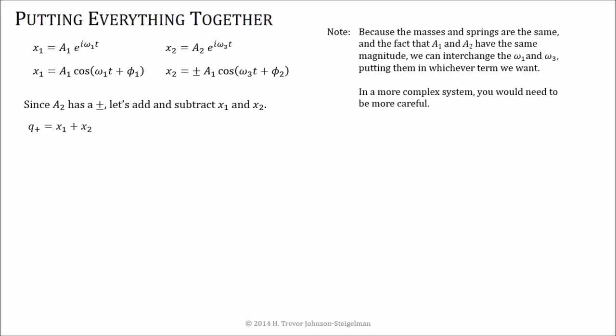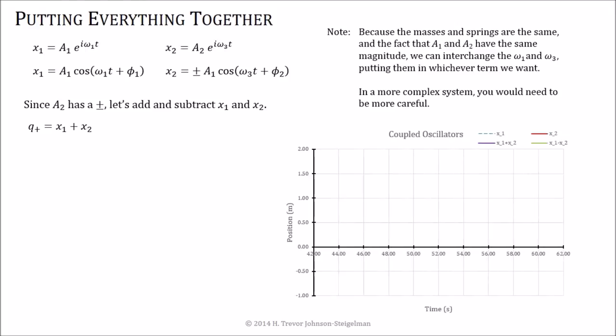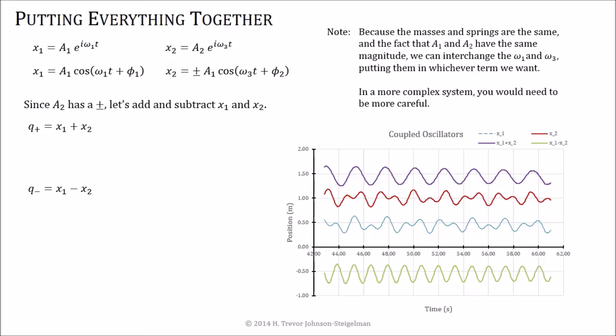Since X1 and X2 are related by this plus and minus sign, let's add and subtract them. If I do Q plus is equal to the sum of the two, and then I plot out the individual bits. So I want to plot X1 plus X2. Suddenly, I've got a oscillatory motion that's very regular. It's not as choppy as these guys are. If I do the same with the subtraction of the two, I again get a second set of oscillations that is very nice and regular in there.